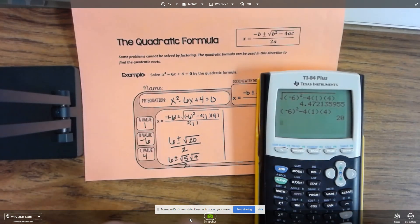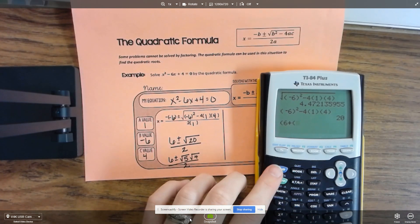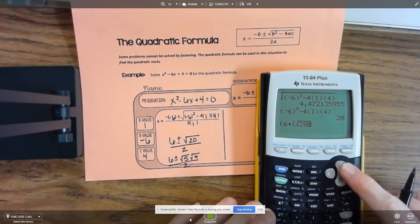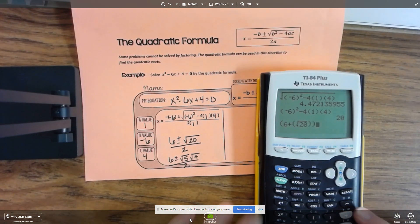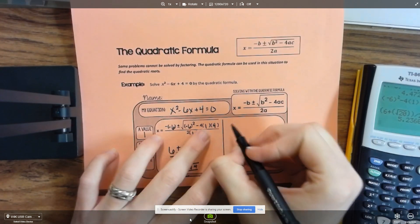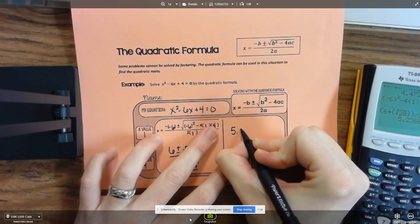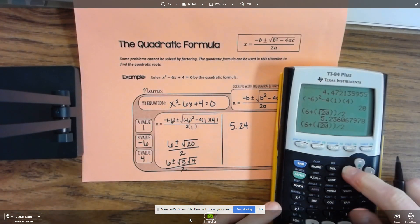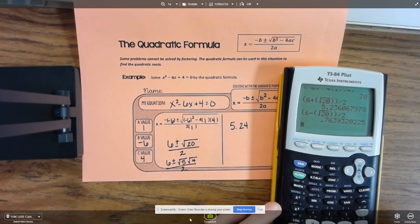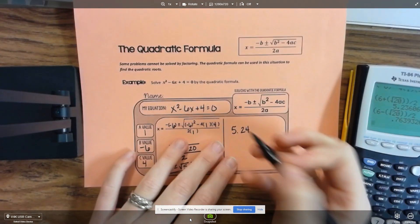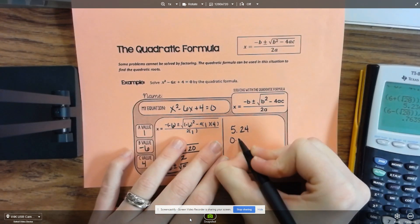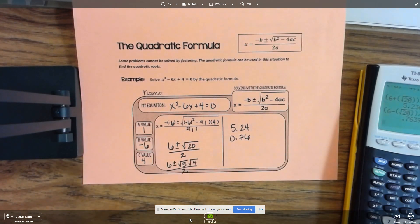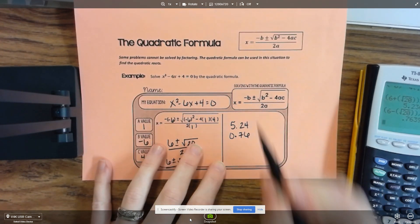Or you can just type this in: 6 plus the square root of 20, and then divide by 2. And so when we add it, we would get 5.24. And then you do the same thing again, and you can subtract it, and we get 0.76. So you're going to have two answers since this is a plus or a minus.